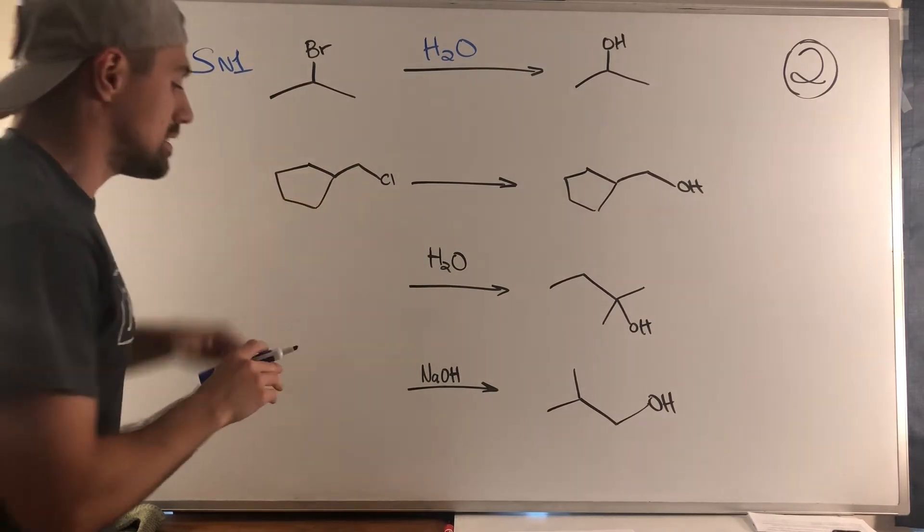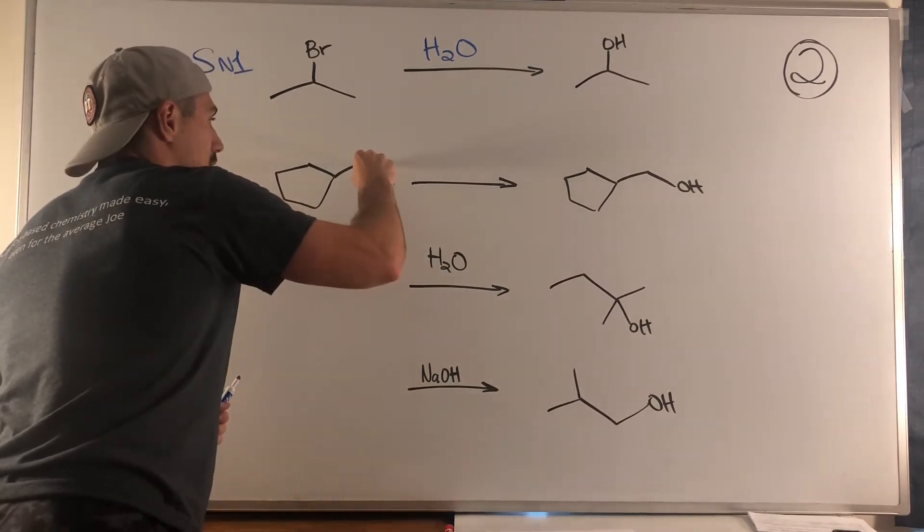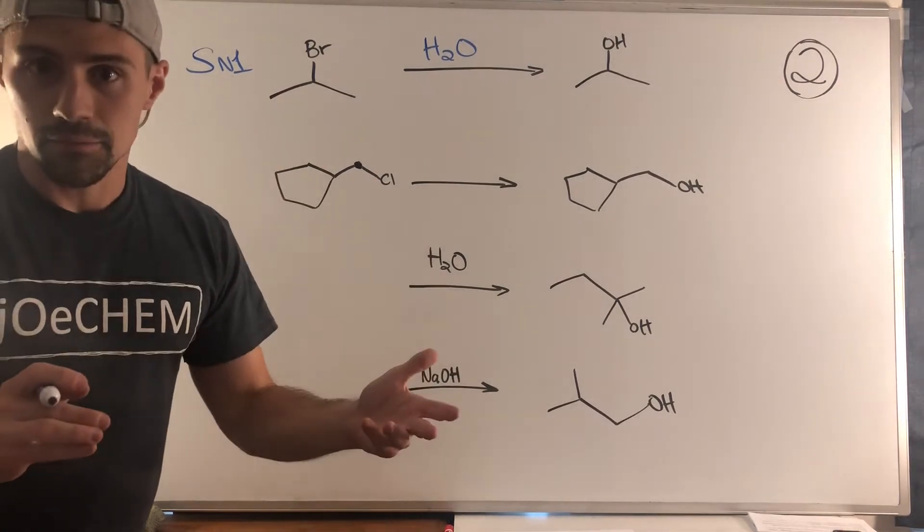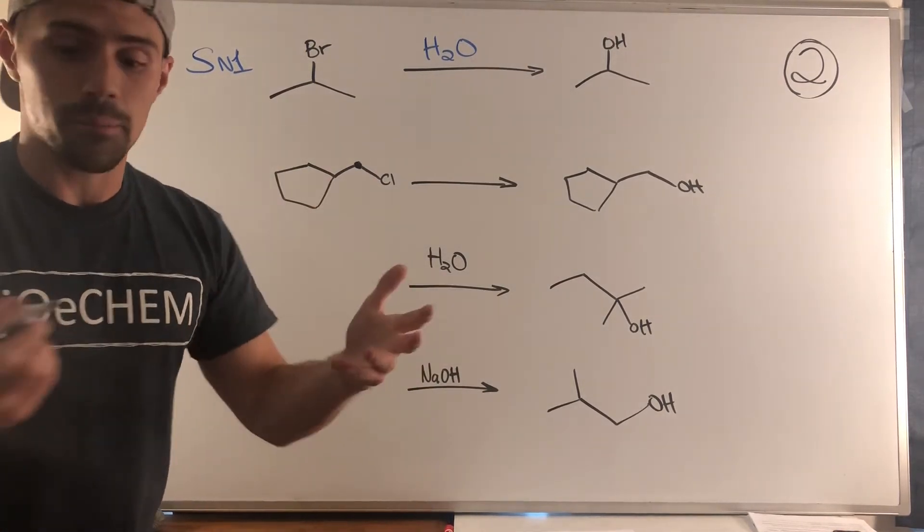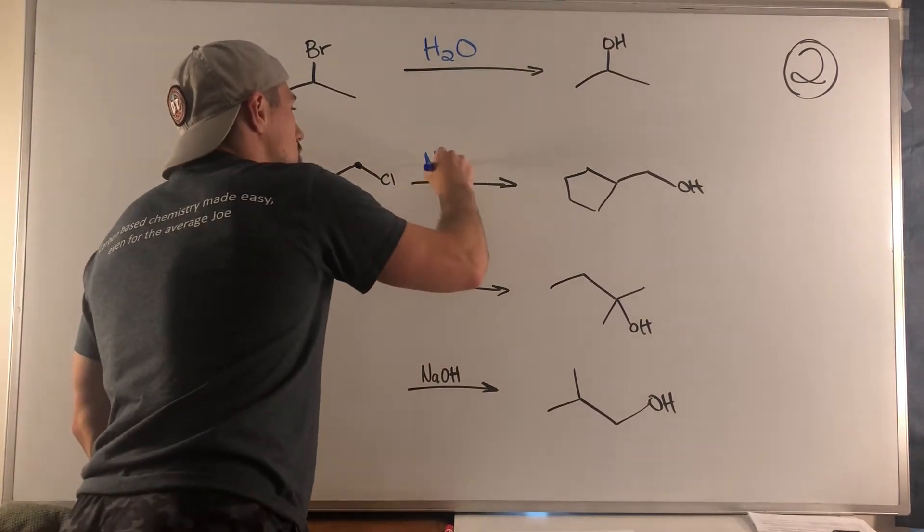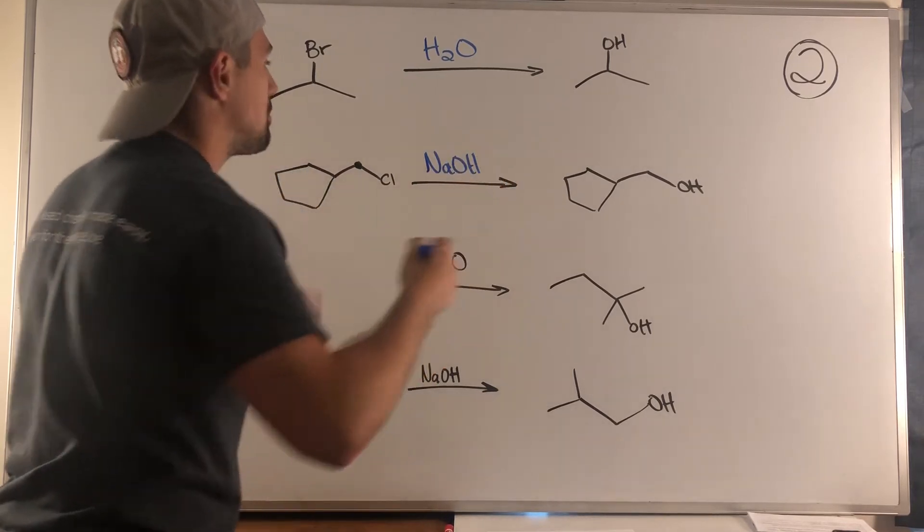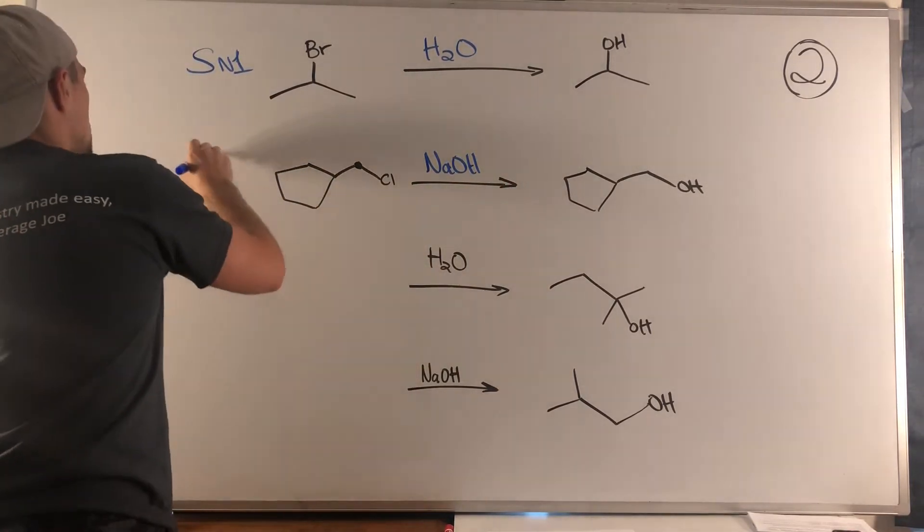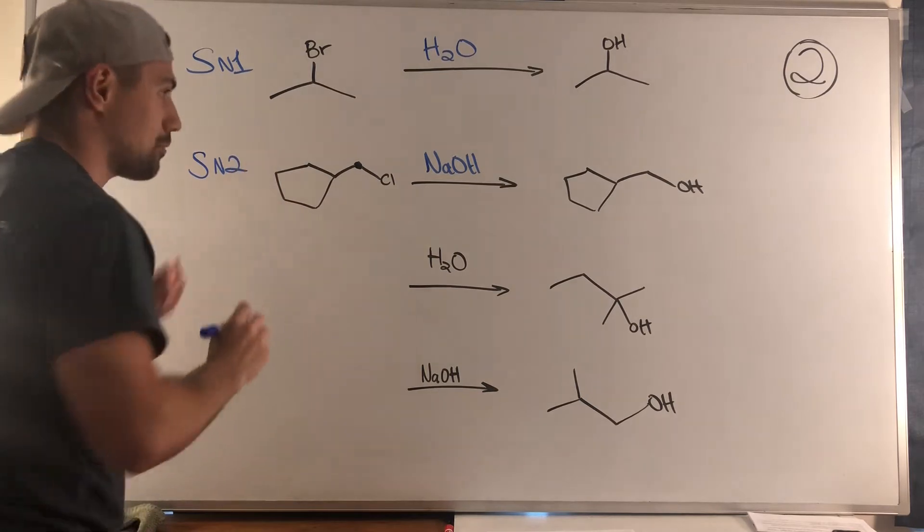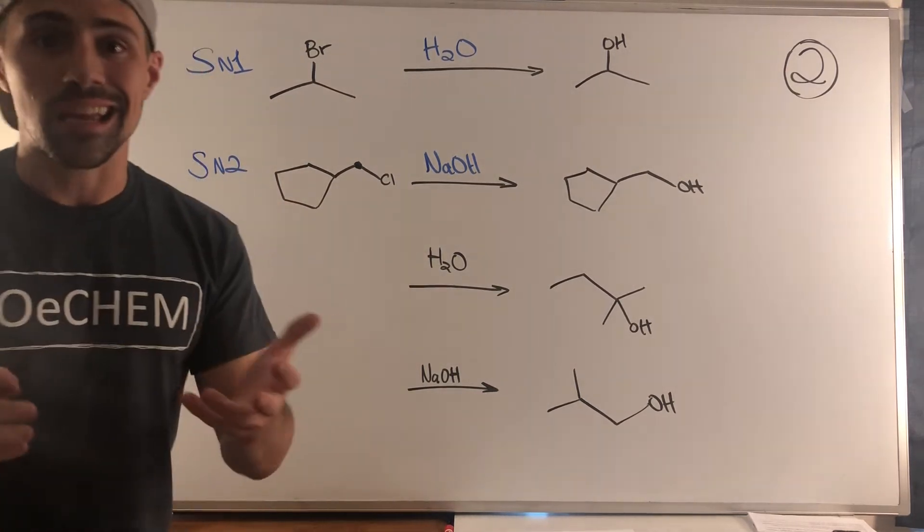Moving to the second problem, we have a primary substrate and a good leaving group. Because it's primary, not sterically encumbered, we can absolutely do SN2 using sodium hydroxide or potassium hydroxide. It's safe, we're not really risking competition with E2 here.